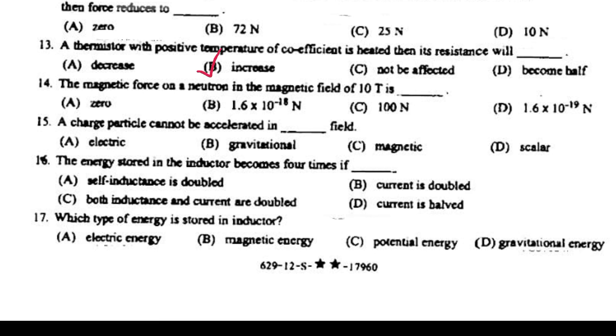The magnetic force on a neutron in the magnetic field of 10 tesla is 0. A charged particle cannot be oscillated in the magnetic field.